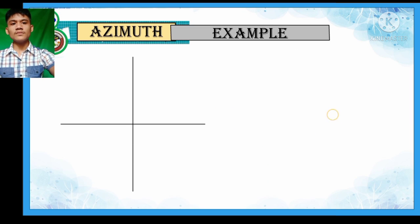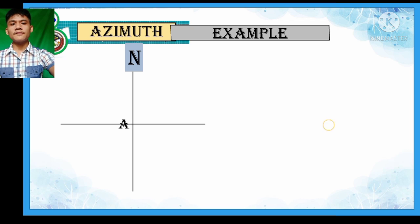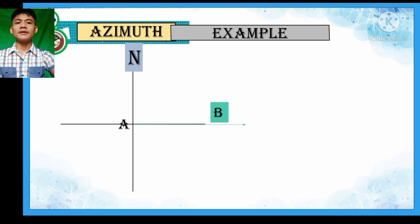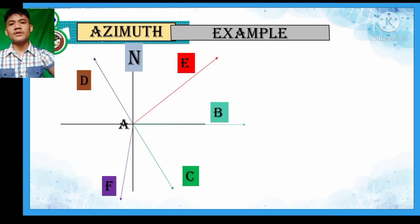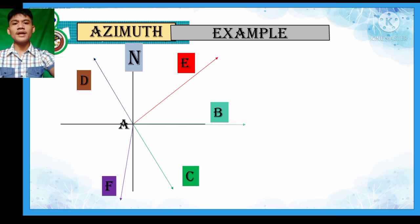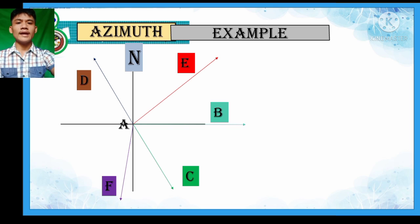So here is the example. We have this illustration with the reference direction, which is the north. The center is denoted as our point A. The first given is the angle or the point B — so we have line AB. Line AB is equal to 90 degrees since it is in line with the east direction, which is valued as 90 degrees.